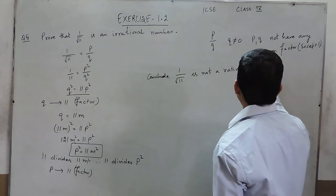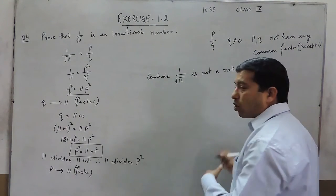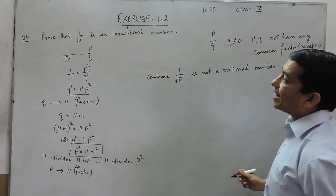And when I am saying that it is not a rational number, that automatically means that 1 upon under root 11 is an irrational number.